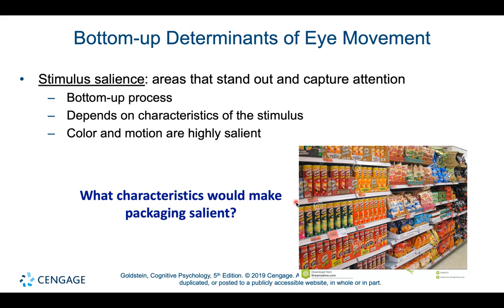What are the things that might determine eye movements? From a top-down perspective, your decisions, your volition, your active engagement of attention to look at certain things will obviously determine eye movements. But stimuli themselves also determine your eye movements in a bottom-up, data-driven process called stimulus salience. Stimuli that are salient are ones that stand out and capture attention, and we know a lot about the characteristics of stimuli that capture attention.